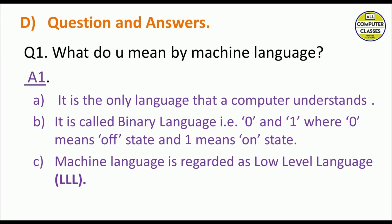The first question answer: what do you mean by machine language? Machine language is the only language a computer understands. Whether we write a program in assembly language or high-level language, it must be converted into machine language, because the machine understands only zero and one. It is also called binary language, where zero means off state and one means on state. Machine language is regarded as a low-level language because it is very close to the hardware of a computer.